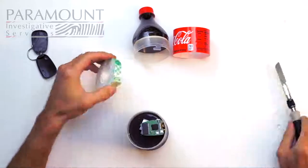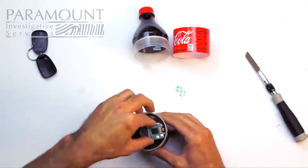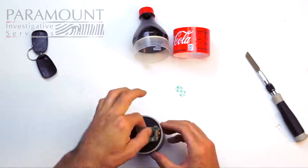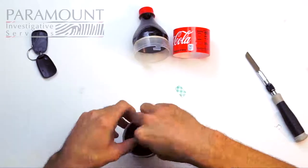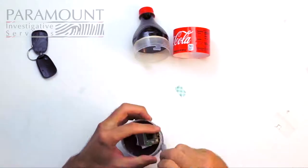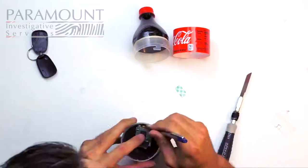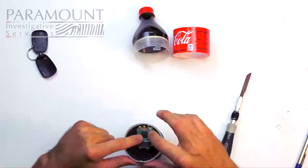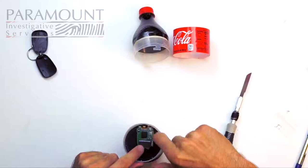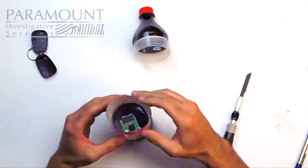Now that everything fits, let's go ahead and double tape the camera down. Put the lens outside of the bottle, make sure everything fits nice and properly. Let's turn the camera on. Nice, everything works well.